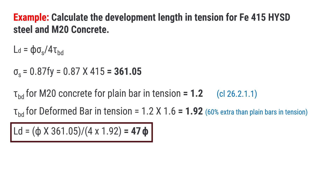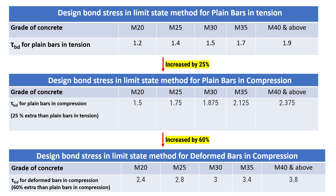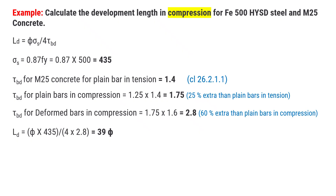Moving on to the calculation of development length for steel in compression. This time we are dealing with Fe500 HYSD steel and M25 concrete. Similarly, we find Sigma_S and then determine the design bond stress. For plain bars in tension it is 1.4, for plain bars in compression it is 25% extra than plain bars in tension, and for deformed bars in compression it is 60% extra than plain bars in compression. After putting all these values into our equation, we get a development length of 39 times the nominal diameter.